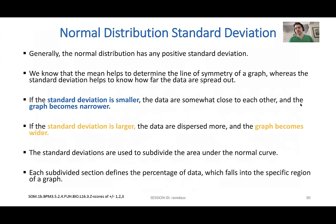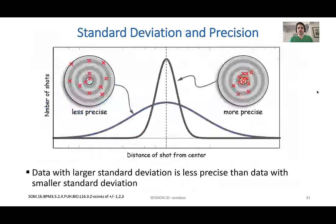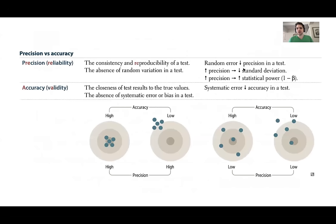Smaller standard deviation becomes narrower. If it's a larger standard deviation, it becomes wider. They very well could ask you that on the test, giving you different graphs.